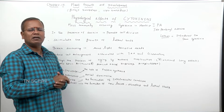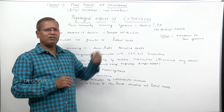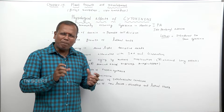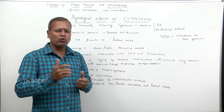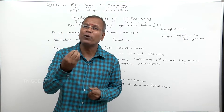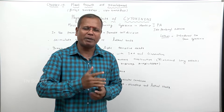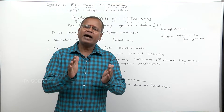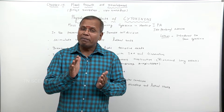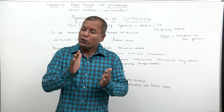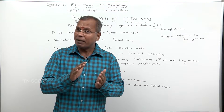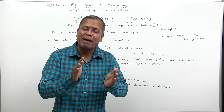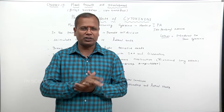In the presence of auxin, cytokinin promotes cell division. This is observed in tissue culture. In tissue culture, a new organism is developed from a single cell under laboratory conditions.